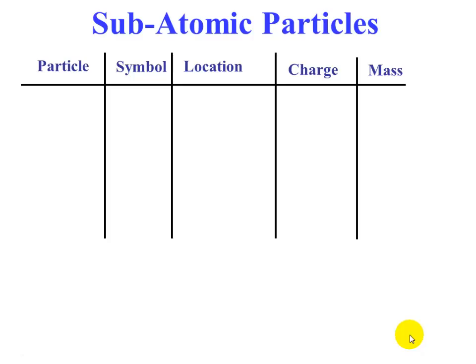We're going to go through the very basic structure of an atom, starting with the subatomic particles. Subatomic particles—sub meaning under and atomic referring to an atom—are particles that are smaller than the atom.